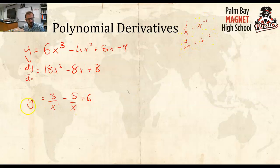let's just rewrite it. So, I have 3x to the negative 2 minus 5x to the negative 1 plus 6.